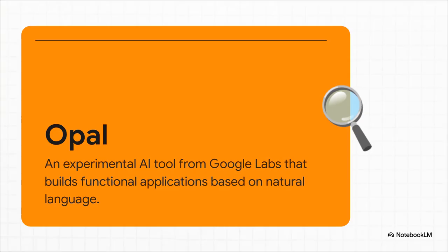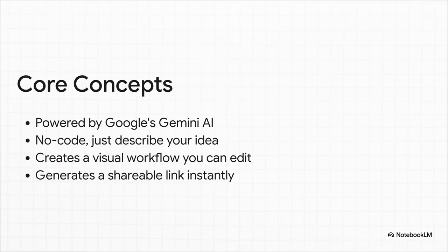What is Google Opal? At its heart, Opal is an experimental tool straight out of Google Labs. You can forget all the complex code, all the confusing interfaces. Its entire reason for existing is to build real working apps from just simple descriptions — you literally just tell it what you want, and it builds the thing for you. It's all powered by Google's Gemini AI, which interprets your ideas. The output isn't just a finished app — it creates a visual workflow, like a map of the app's logic that you can actually edit. And when you're happy with it, you get a shareable link just like that.